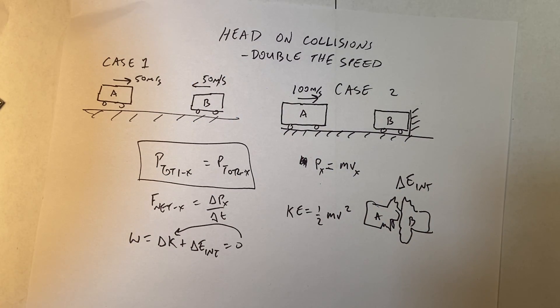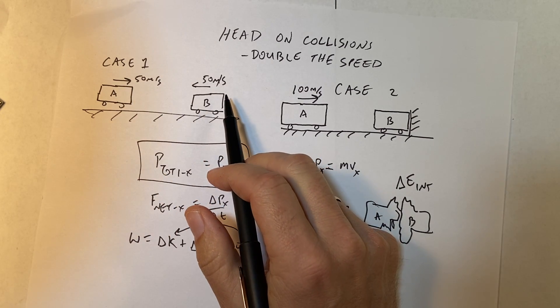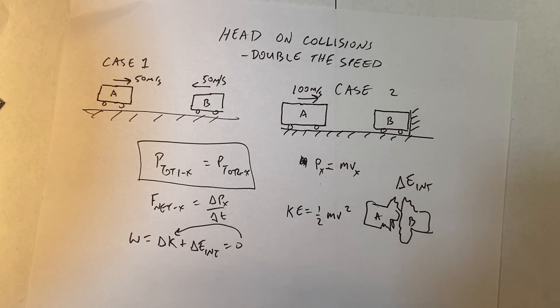That means that this change in kinetic energy is something that I really want to look at. What's the change in kinetic energy here? What's the change in kinetic energy there? If the change in kinetic energy is the same, then we're all good. Let's do case one. So this is two cars, both going 50 meters per second, same mass, head-on collision.